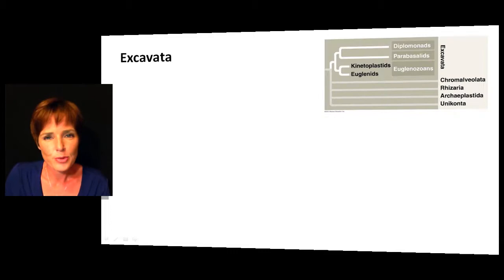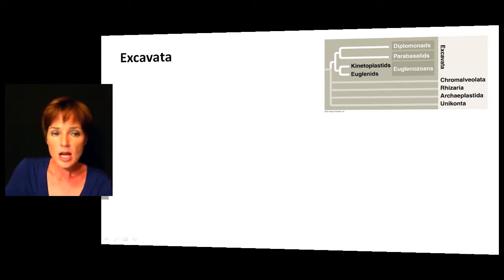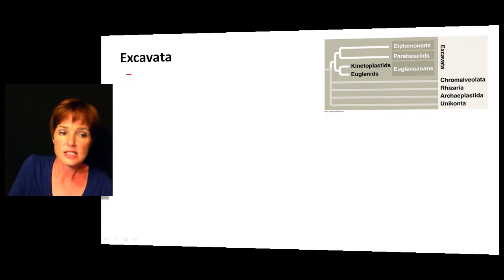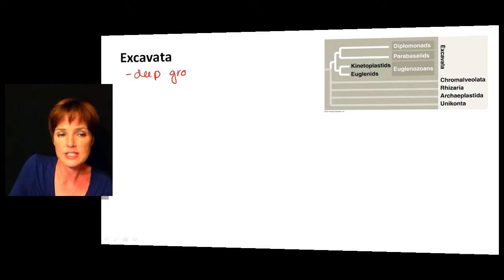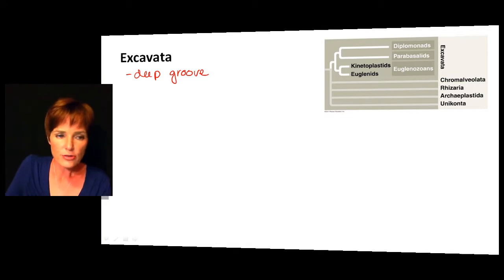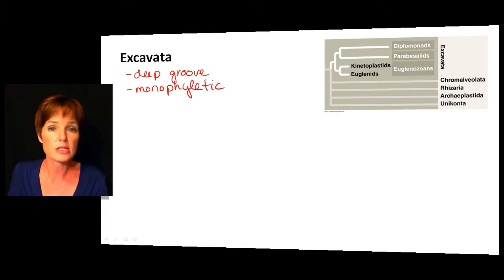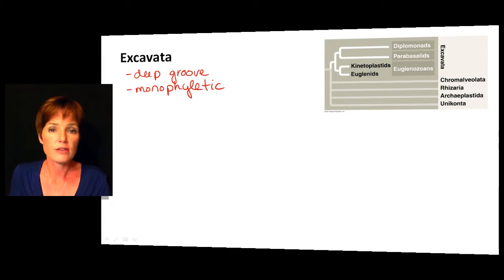The first protist group we're going to talk about is Excavata. Excavata includes three subgroups: the diplomonads, the parabasalids, and the euglenozoans. One of the main characteristics of Excavata is that these organisms have a deep groove that runs down the cell, which is pretty distinctive when you look at them. Another thing is that each of the groups here is monophyletic, which is fairly unique when talking about protist groups.